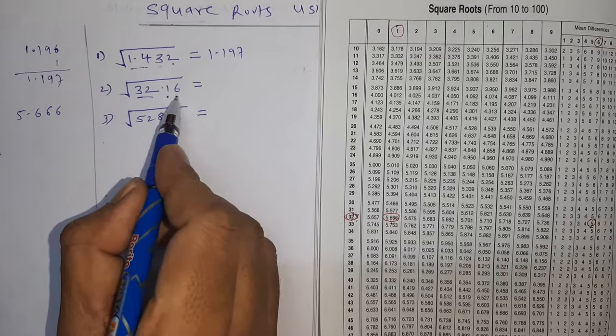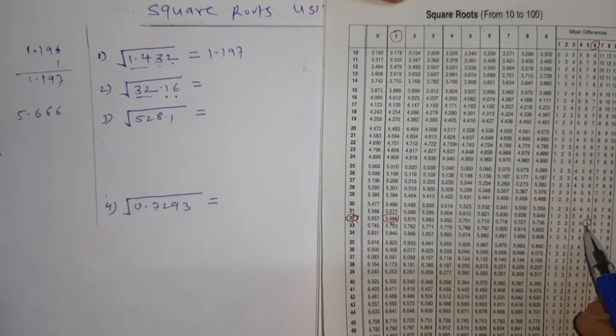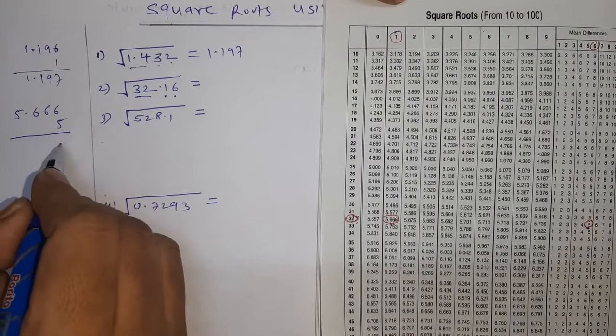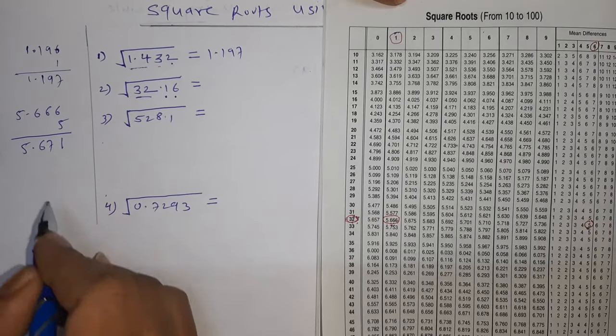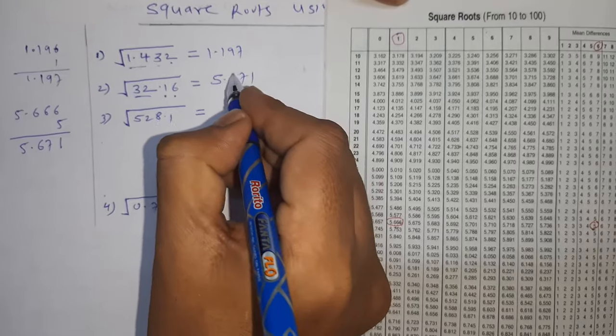Fourth digit 6, we'll see in mean difference. That is equal to 5. So total we'll get 6 plus 5, which is 5.671.